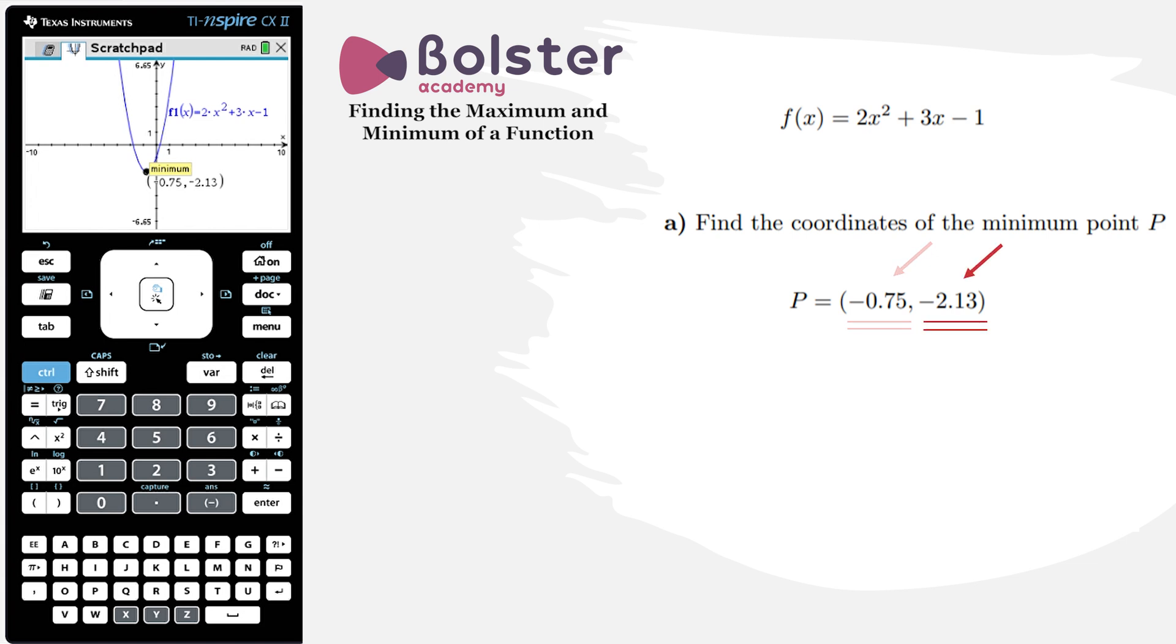However, the y-coordinate minus 2.13, that's the actual minimum value of the function. That's the lowest point that the function gets to on its graph.